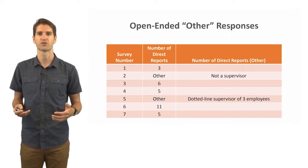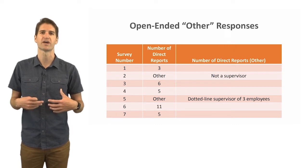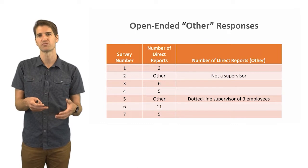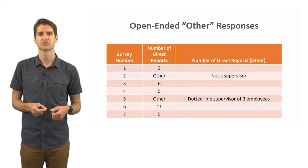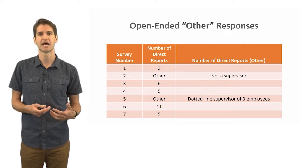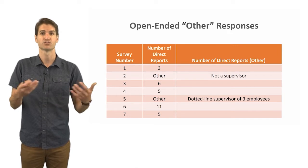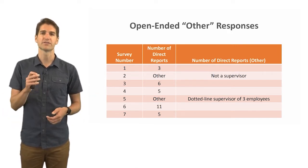You'll notice what those individual responses are in that third column which says number of direct reports (other). Here you'll notice that the first person who put other wrote 'not a supervisor,' so maybe they received this survey by mistake. This was maybe intended for just supervisors but for whatever reason they got it. So then you'd have to decide, is it appropriate to delete this person from this dataset as they aren't a supervisor and what we're interested in perhaps with this survey is supervisor behavior, supervisor perceptions, attitudes and so forth.